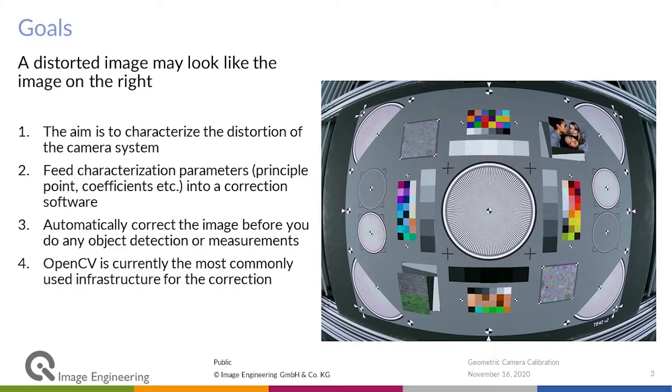the whole process of geometric calibration is to characterize the distortion of the camera system, the lens including the sensor, and to feed those characterization parameters into a correction software that automatically corrects the image before you do any other type of evaluation.